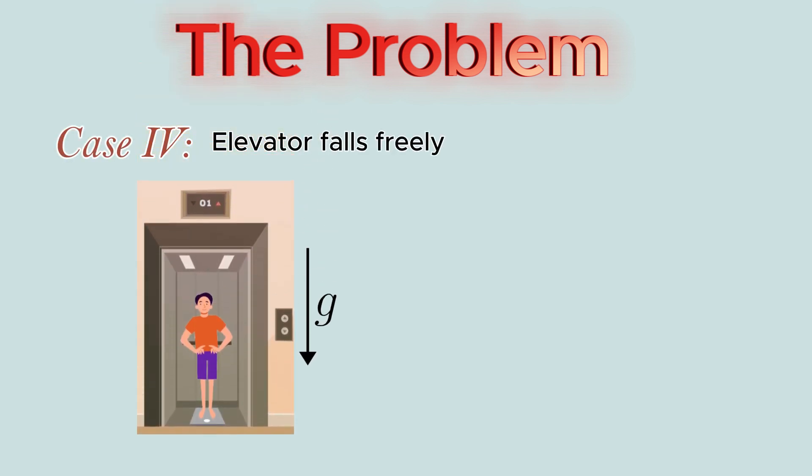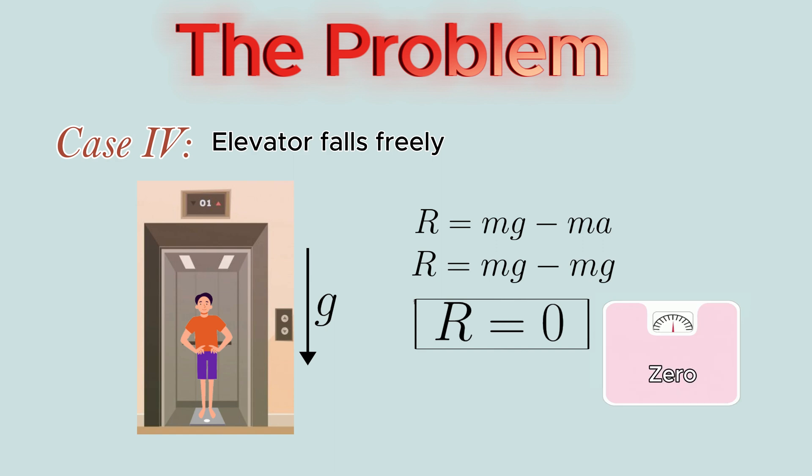Another case can be when the elevator falls freely, that is, the acceleration is equal to the acceleration due to gravity g. As we obtained in the previous case, the normal reaction R = mg - ma. Therefore, if we substitute a = g, we will get R = 0. Therefore, the weight of the man will now be zero, that is, he will be in a state of weightlessness.